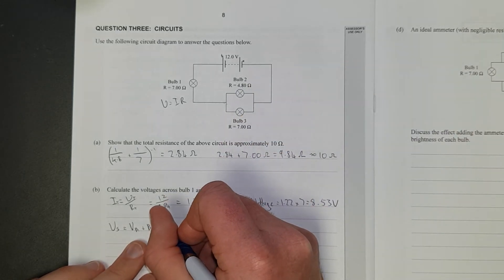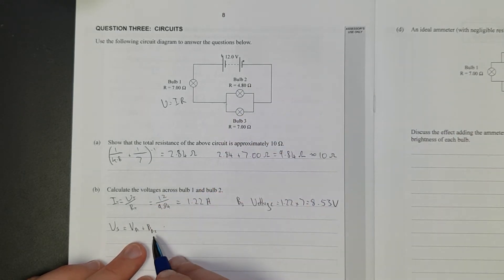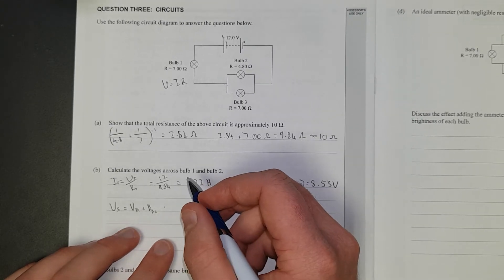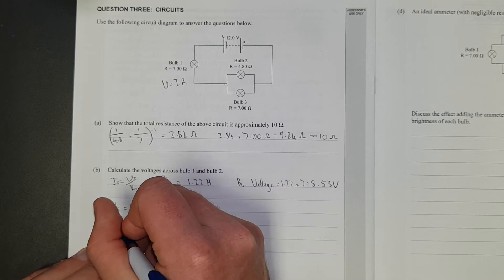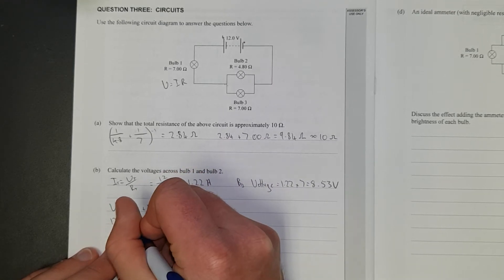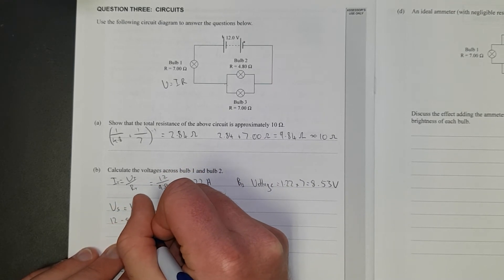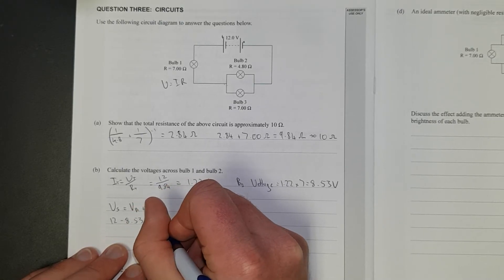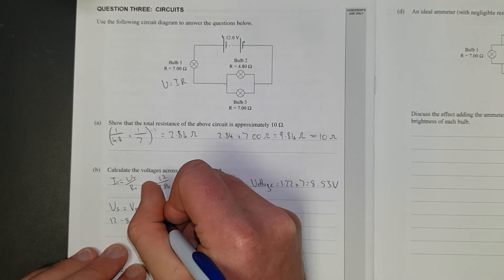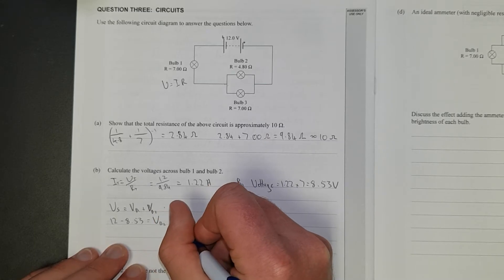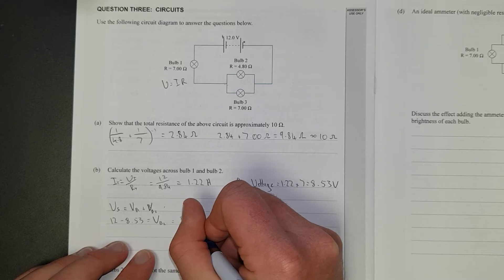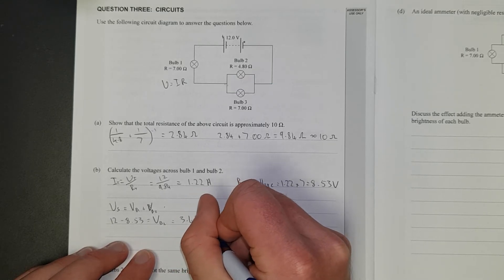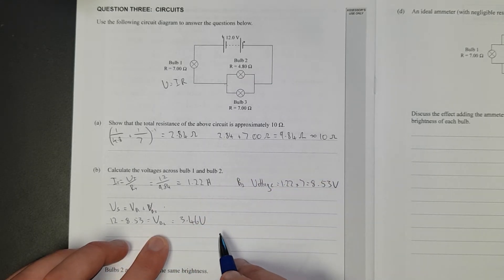Right, so that is going to be equal to, oh we're going to have to rearrange for V2, aren't we? We are. So we're going to do 12, that's the total supply, minus 8.53 equals Vb2, which is going to be equal to 3.46 volts. Easy peasy.